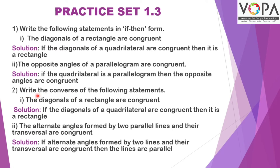Write the converse of the following statements. Statement 1: the diagonals of a rectangle are congruent. Solution: the converse is — if the diagonals of a quadrilateral are congruent, then it is a rectangle. Statement 2: the alternate angles formed by two parallel lines and the transversal are congruent. Solution: if the alternate angles formed by two lines and the transversal are congruent, then the lines are parallel.